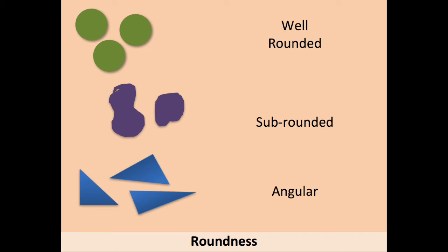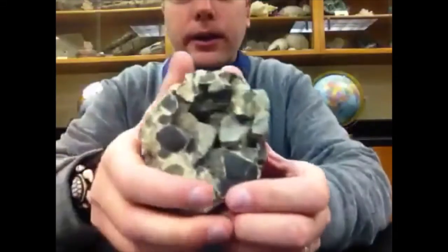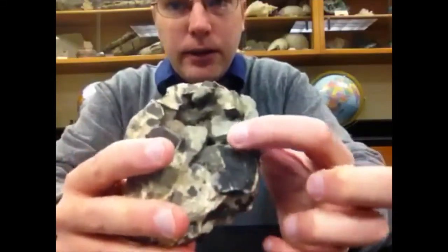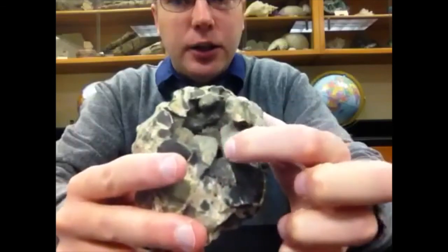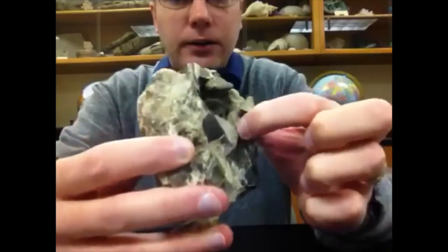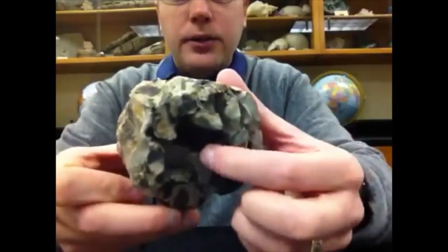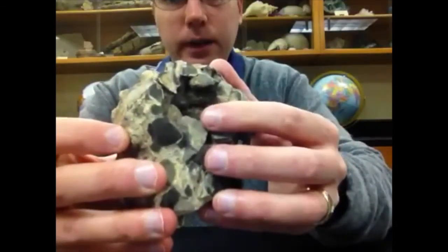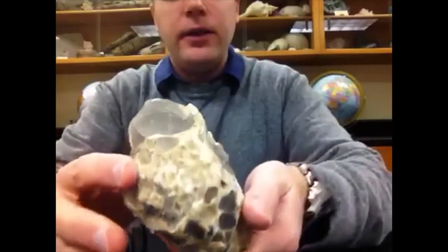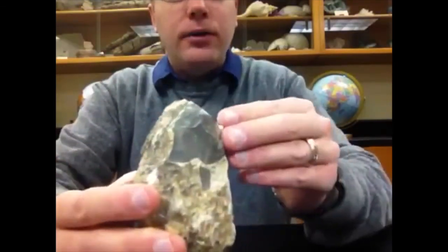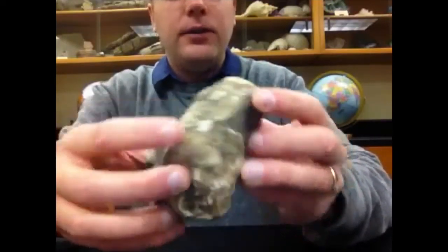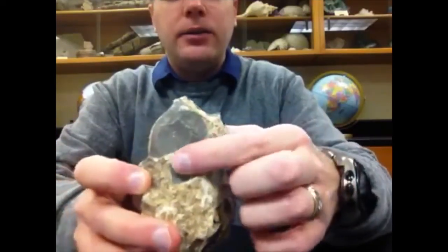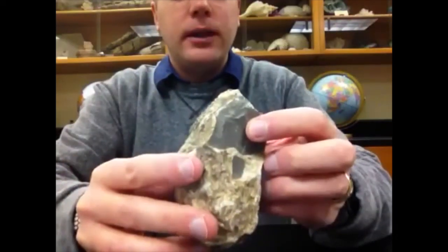Our last roundness category is angular, where we're looking at very jagged, sharp clasts within the rock. I'll pick one that has gravels so it'll be easier to see. When we look at the individual grains, we can see sharp angles — there are sharp corners where the angle changes and the faces change between the angles on the clasts. Even if grains aren't projecting out from the rock, we can still see very sharp angles as we look at the grain around the rock.